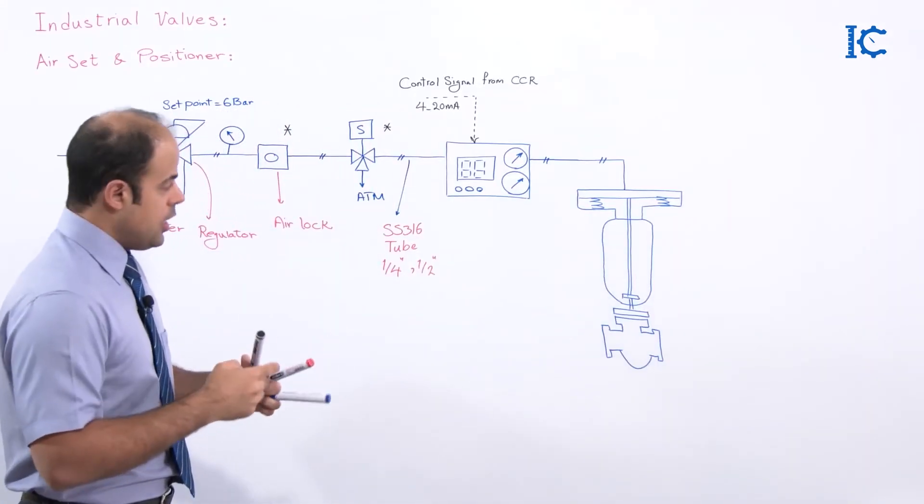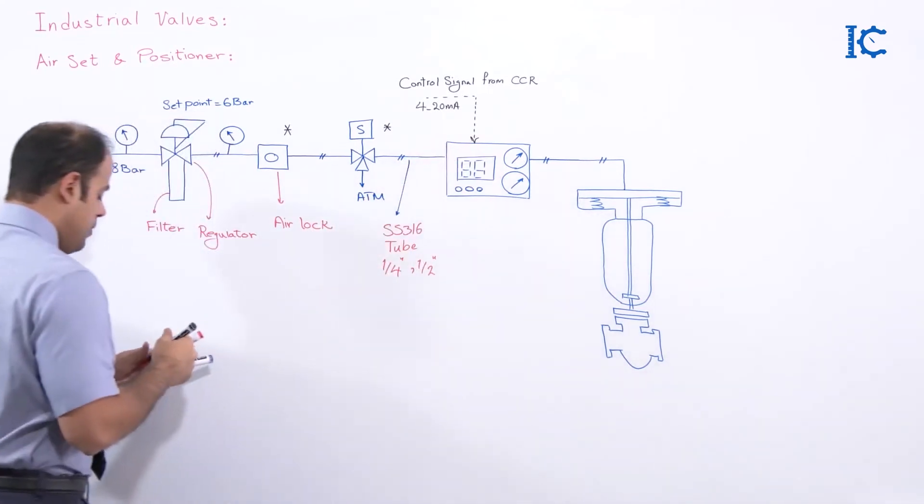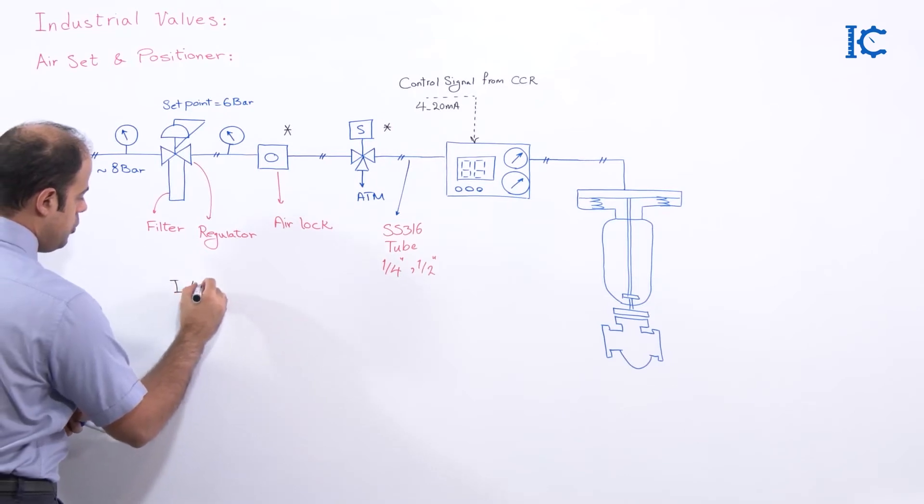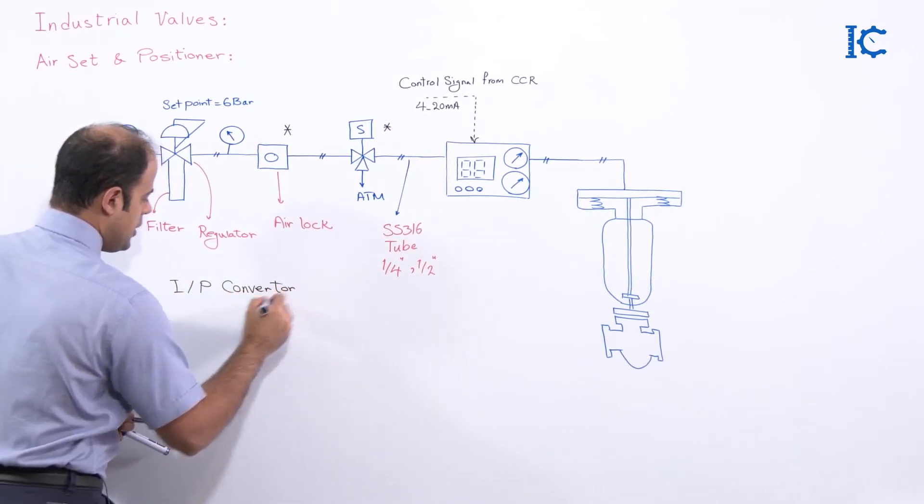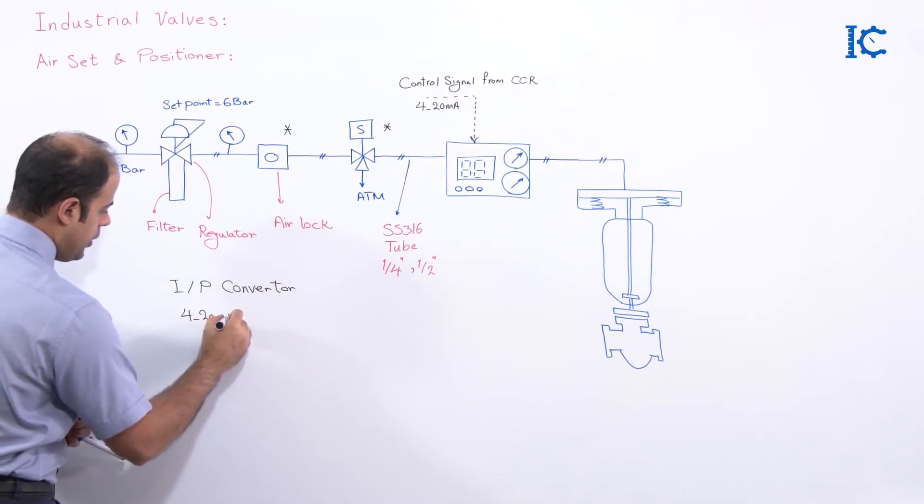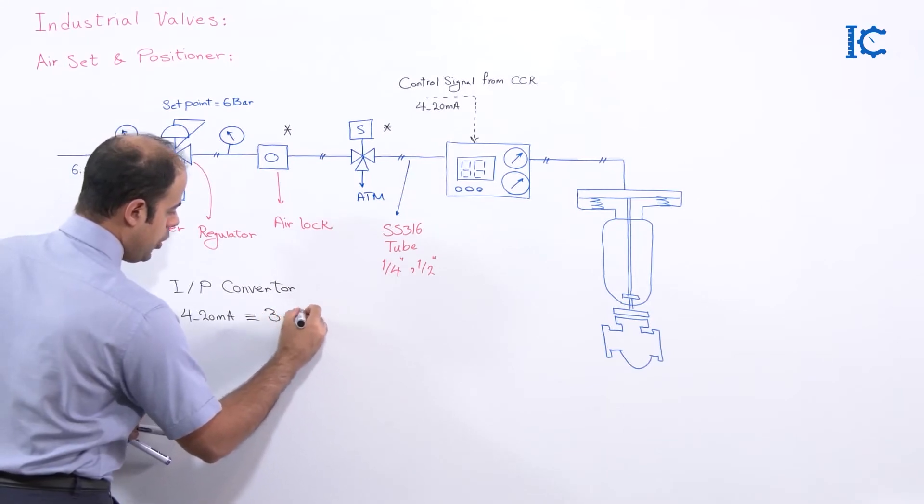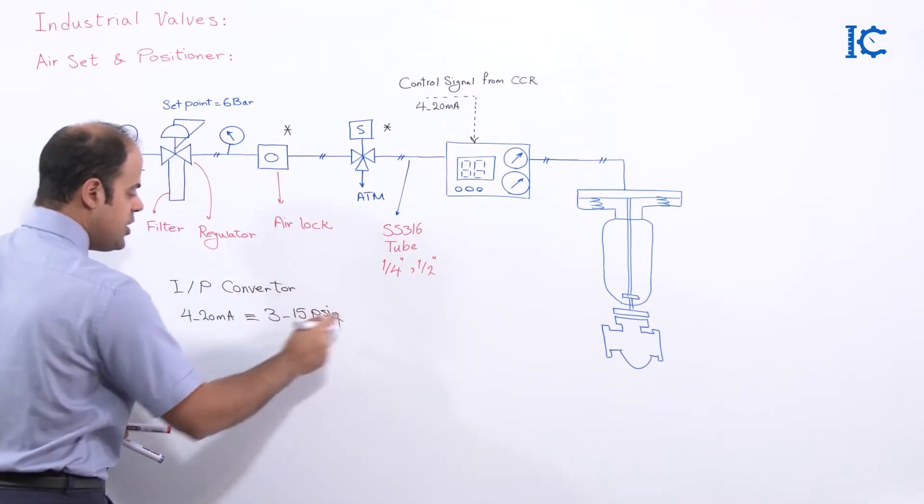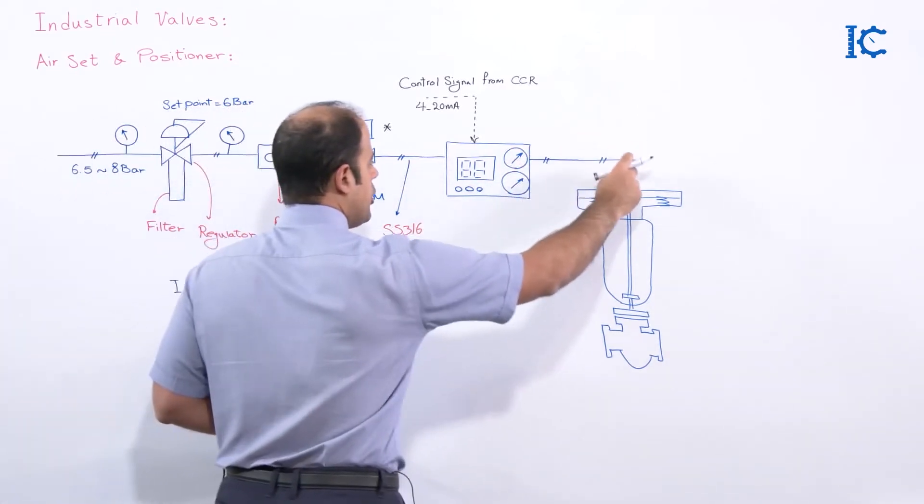So as you could remember, there is a unit in the positioner which is called an I2P converter. It means that 4-20 mA is going to be changed to 3-15 psig, and with the help of this air control signal we can have some pressure here too.